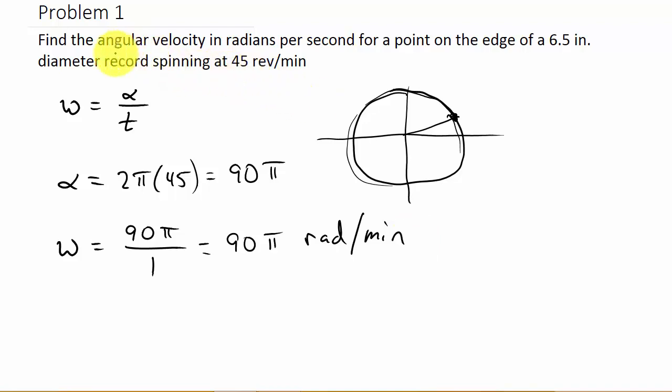Well, notice what they asked us. Find the angular velocity in radians per second. So what I usually do is I don't worry about what units they're asking for. I just go ahead and calculate everything based on the units they give me. And then once I get this answer here, then I convert it to what they want. So now we've got to take 90 pi radians per minute and convert that to radians per second.